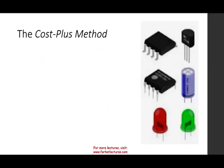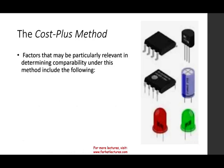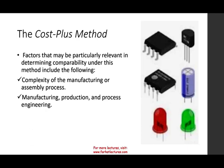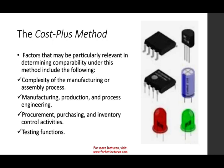Factors that could be considered relevant include the complexity of the manufacturing or assembly process — so we can look at similar manufacturing or assembly processes — as well as manufacturing, production, and engineering processes: how they make the product, how they buy it, how they control inventory, and how they test it. We can look at these factors to determine whether we have a comparability.